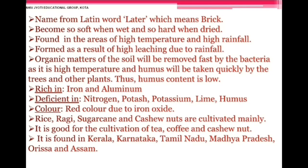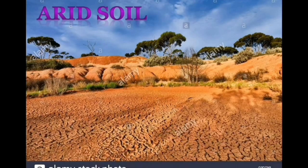Laterite soil gets its name from the Latin word 'later' meaning brick. It becomes soft when wet and hard when dry. It is found in areas of high temperature and high rainfall, formed as a result of high leaching due to rainfall. Organic matter is removed quickly by bacteria in high temperatures, and humus is taken up quickly by trees, so humus content is low. It is rich in iron and aluminium but deficient in nitrogen, potassium, lime, and humus. Color is red due to iron oxide. Rice, ragi, sugarcane, and cashew nuts are cultivated; it is especially good for tea, coffee, and cashew nut. Found in Kerala, Karnataka, Tamil Nadu, Madhya Pradesh, Odisha, and Assam.